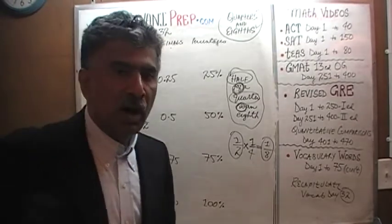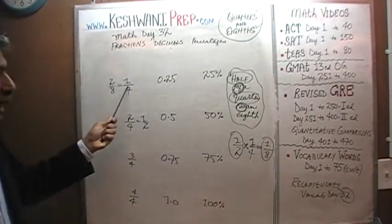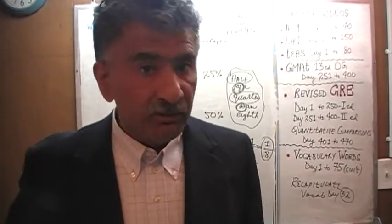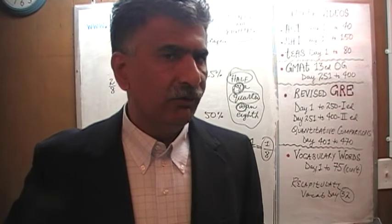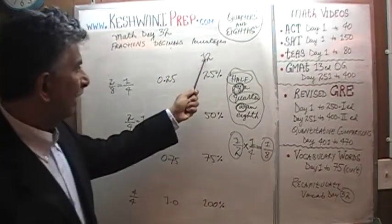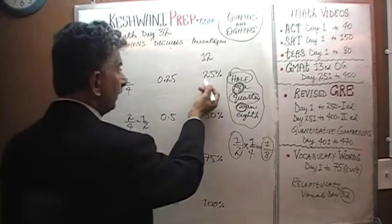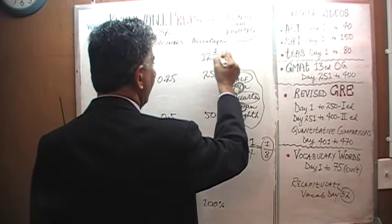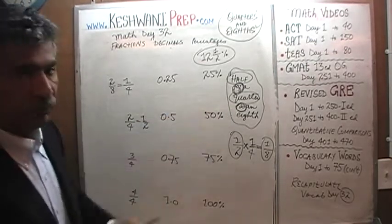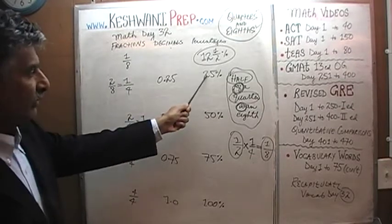As long as we know that half of a quarter is an eighth, we can derive all of our eighths. A quarter is 25%, so what is half of 25? Ask yourself: what is half of 24? Half of 24 is 12. We have 25, so there's one left over — half of one is one half. Therefore, half of 25 is 12 and a half. That's our one eighth — it's half of 25%, and half of one quarter is one eighth, so one eighth equals 12 and a half percent.